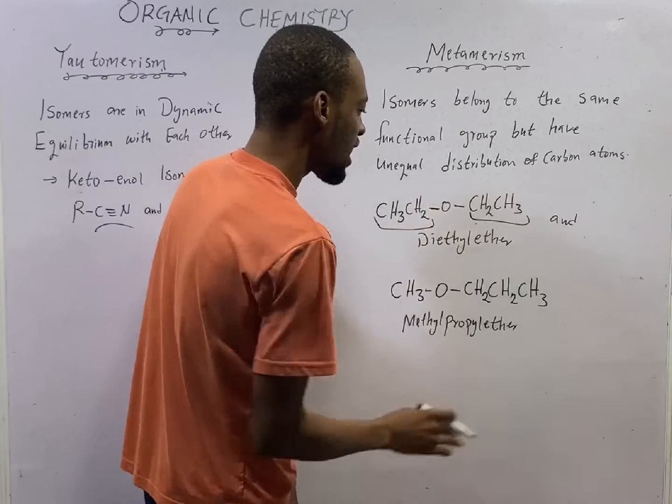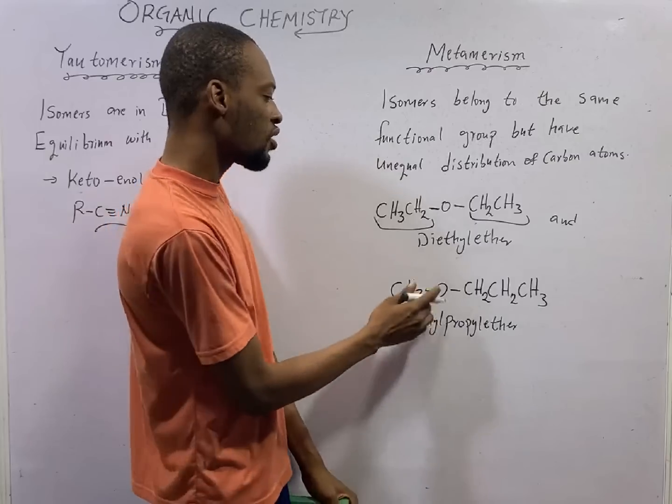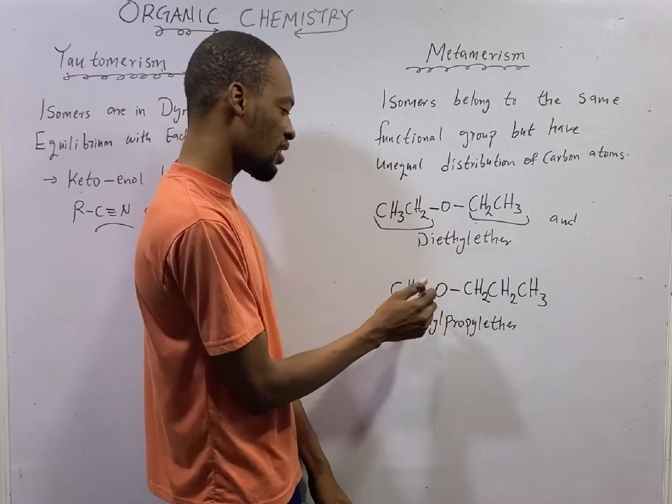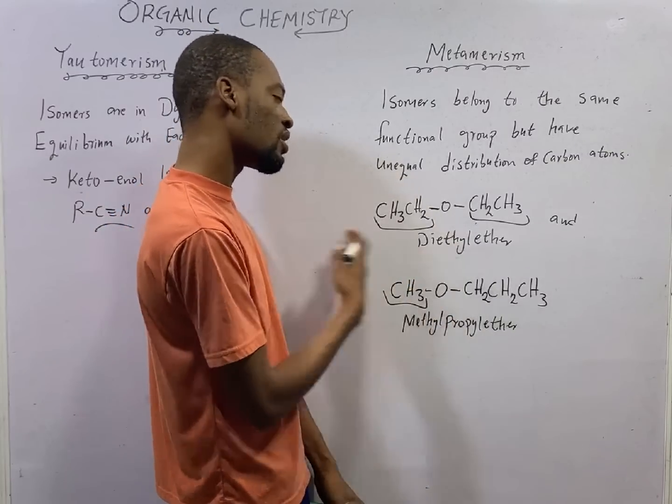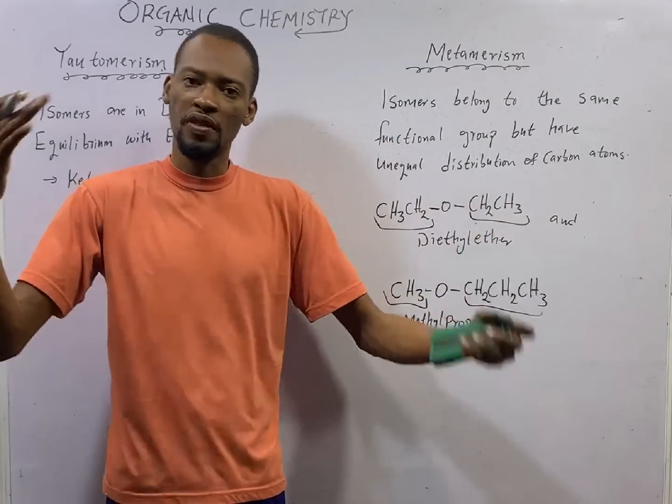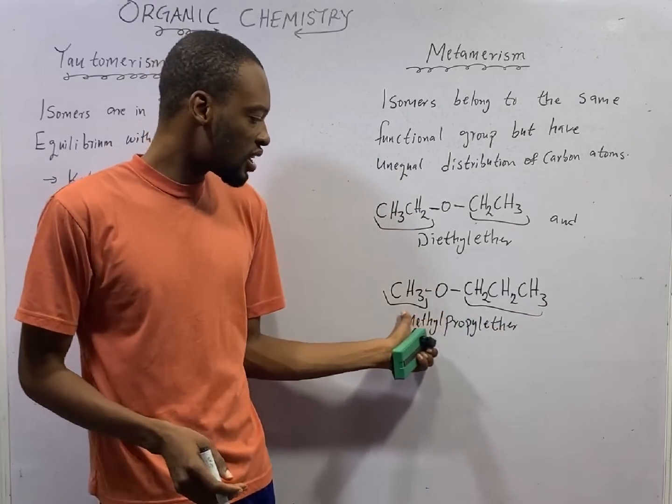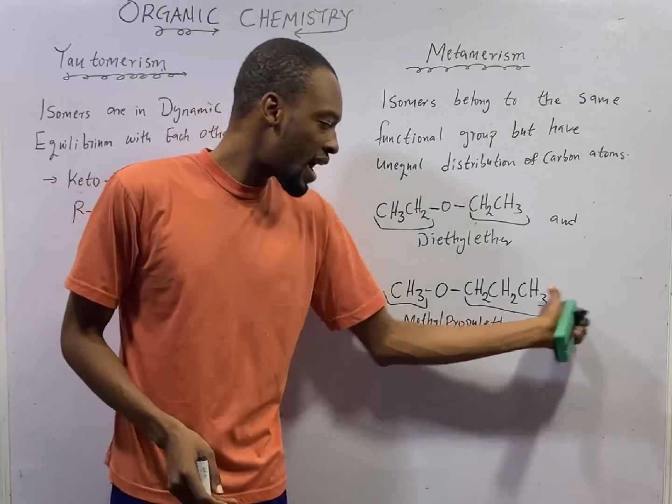This is diethyl ether. Look at here. The functional group remains ether, but you have just one carbon towards the left and three carbons towards the right. So there is unequal distribution of carbon at the right and left of the functional group. And this is methyl propyl ether.